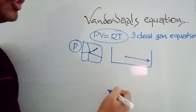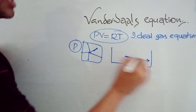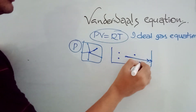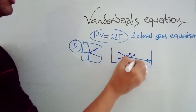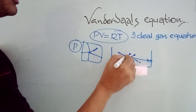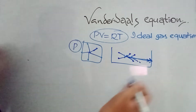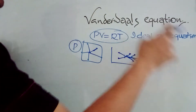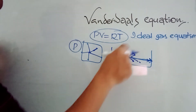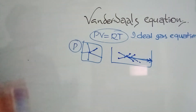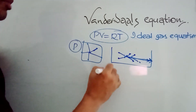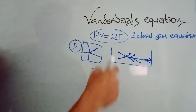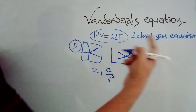For example, if this molecule is going to hit the wall and create some pressure, we expect it to hit with some force. But actually, when other molecules are surrounding it, those other molecules attract it. When others exert attractions, it cannot hit the face of the container with the same impact — the impact will be less. So we need to add some correction force, which equals A/V².